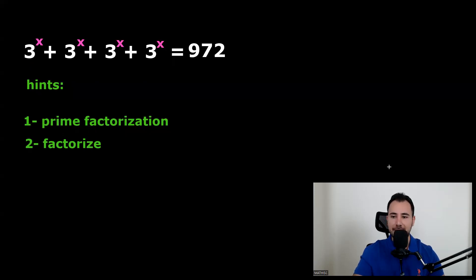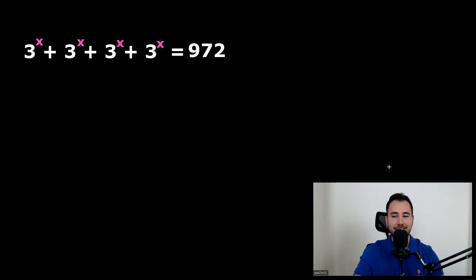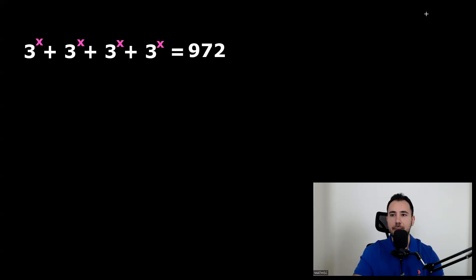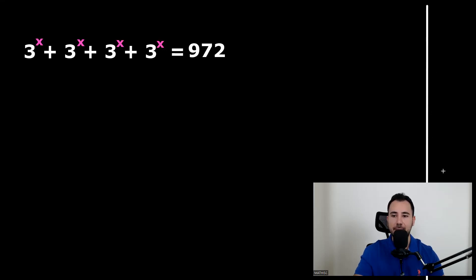In case you have done it and you want to check, or you didn't listen to me at all, let's do it together. So first, prime factorization of the right-hand side. I'm going to do this vertically. I will write 972 here.